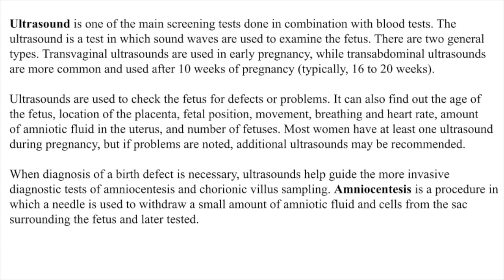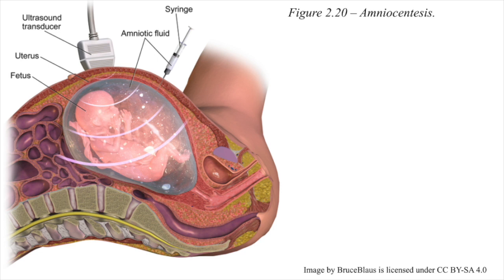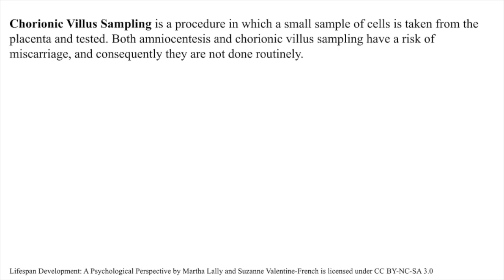When diagnosis of a birth defect is necessary, ultrasounds help guide the more invasive diagnostic tests of amniocentesis and chorionic villus sampling. Amniocentesis is a procedure in which a needle is used to withdraw a small amount of amniotic fluid and cells from the sac surrounding the fetus, which are later tested. Chorionic villus sampling is a procedure in which a small sample of cells is taken from the placenta and tested. Both amniocentesis and chorionic villus sampling have a risk of miscarriage, and consequently, they are not done routinely.